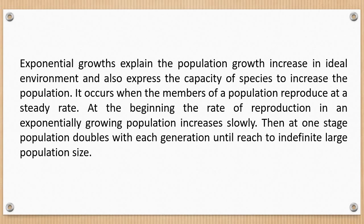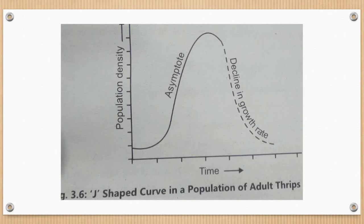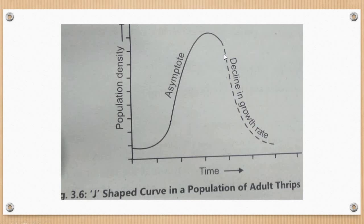In case of the exponential growth curve — why is it called J-shaped? On a graph with population density on the Y-axis and time or generations on the X-axis, the curve appears like a J shape. This type of growth involves a geometric ratio of increase up to a certain point, and then there is an abrupt decline in the growth rate. This decline is due to factors of environmental resistance — the population cannot grow beyond a limit.